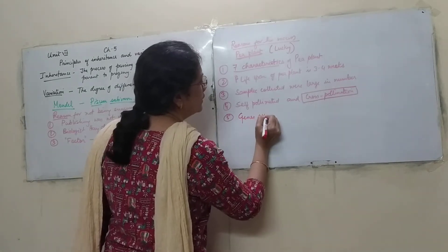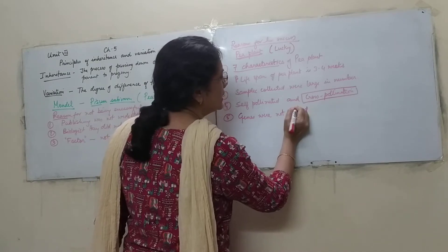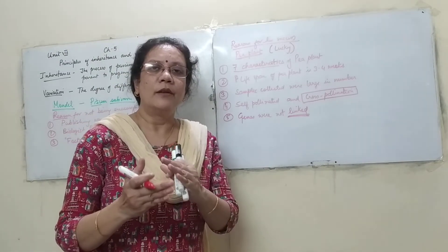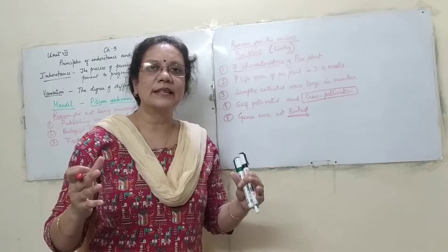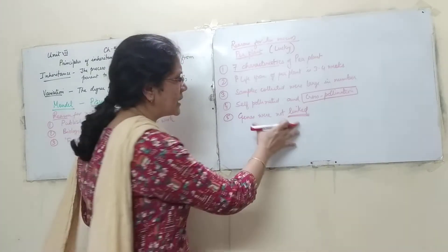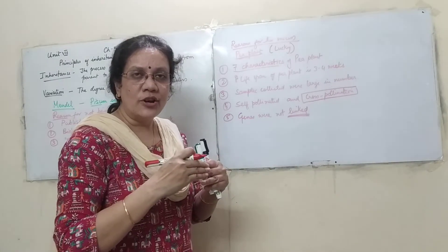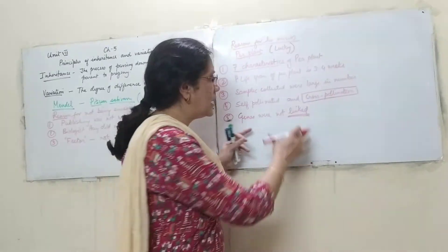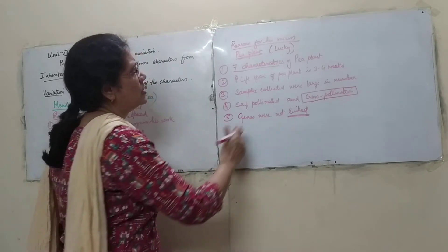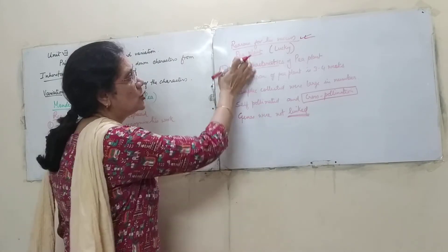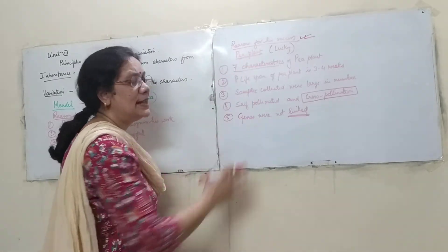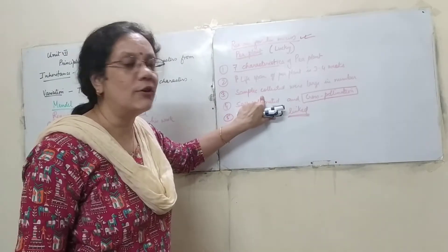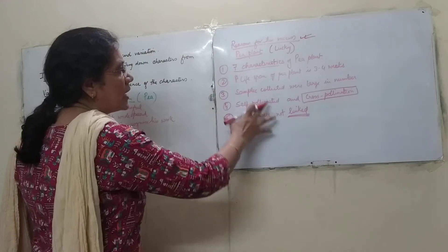He was lucky because if there are linked genes, crossing over doesn't take place and the frequency of variation changes. With contrasting characters — only two types with nothing in between — his results were clear. The reason for success is sometimes asked as to why he chose the pea plant, and the answers relate to these features: contrasting characters, cross-pollination ability, and large sample sizes. His conclusion was that factors pass down from one generation to another.